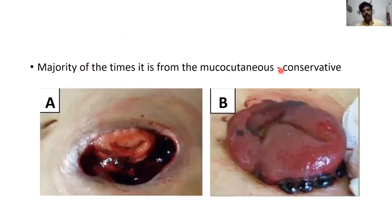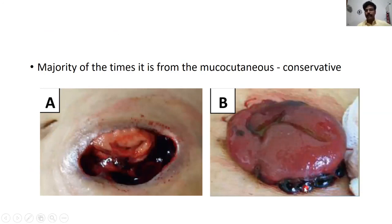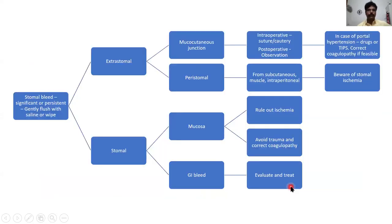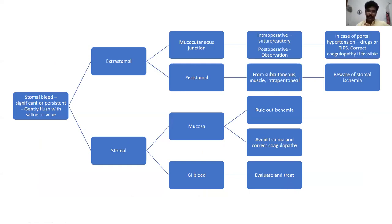The majority of time bleeding is mucocutaneous and is managed conservatively. Despite being mucocutaneous, the blood can sometimes coat the intestine or be well demarcated and confined to the mucocutaneous junction. For significant or persistent bleeding — not just one or two drops — I would like to ascertain whether it is extra-stomal or intra-stomal. To do this, I remove the stoma bag and gently flush the stoma with saline to find the exact site of bleeding.